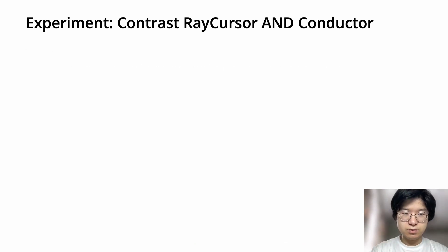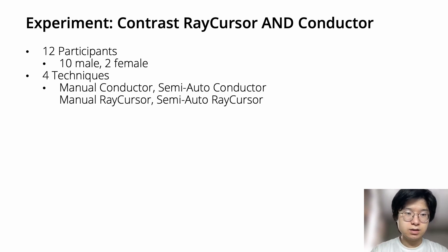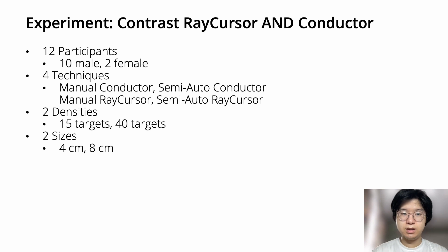For experiment settings, we recruited 12 participants: 10 male and 2 female. We have four techniques: Manual Conductor, Semi-automatic Conductor, Manual RayCursor, and Semi-automatic RayCursor. We have two density settings: 15 targets per cluster and 40 targets per cluster. We also have two size settings: 4 centimeters and 8 centimeters.